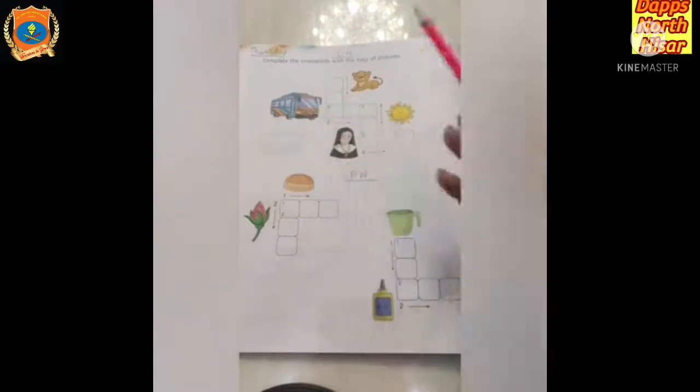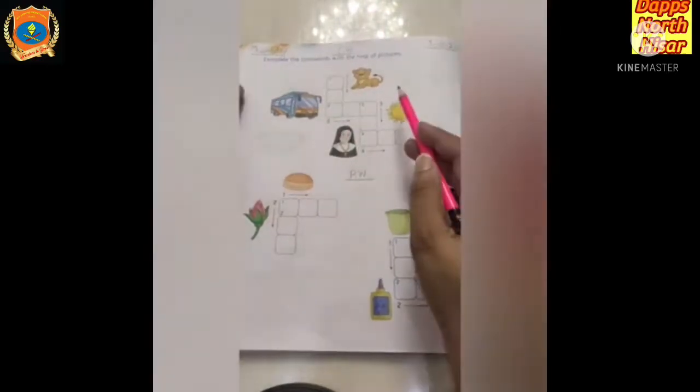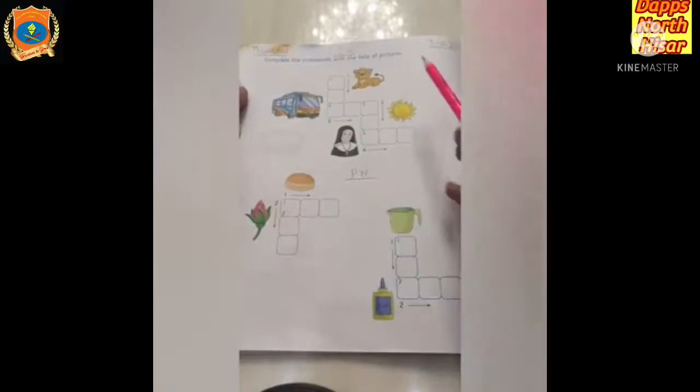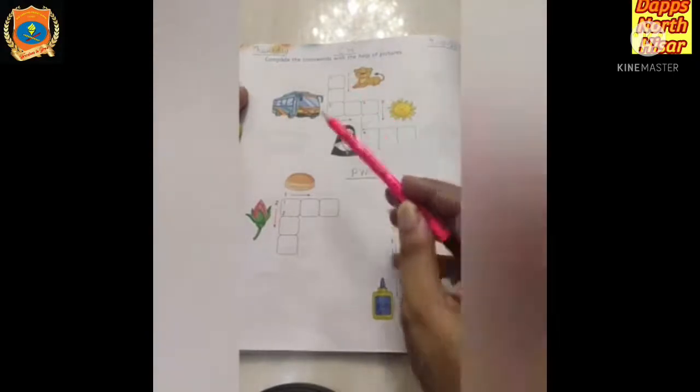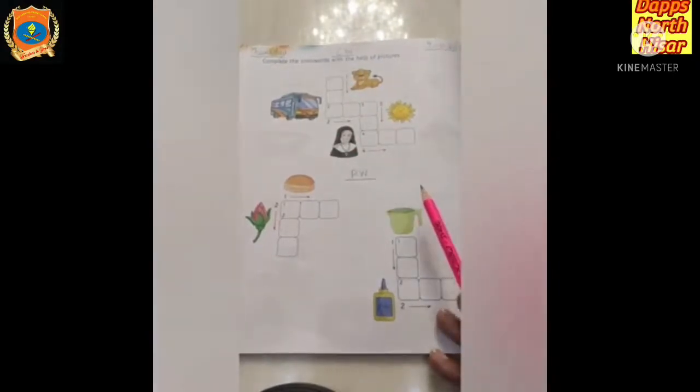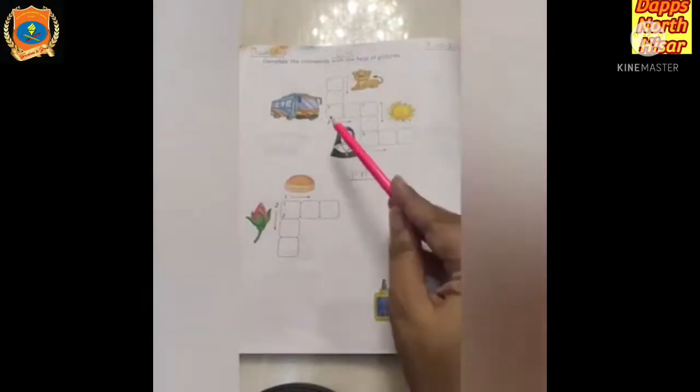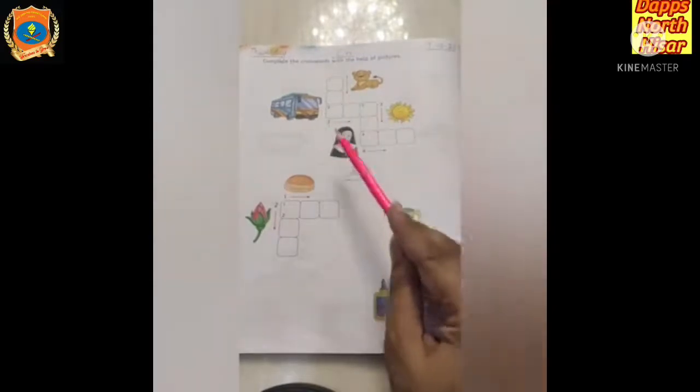Complete the crosswords with the help of pictures. Here you can see few pictures are given and there is a crossword. Crossword is a pattern of boxes in which we have to write our answers.